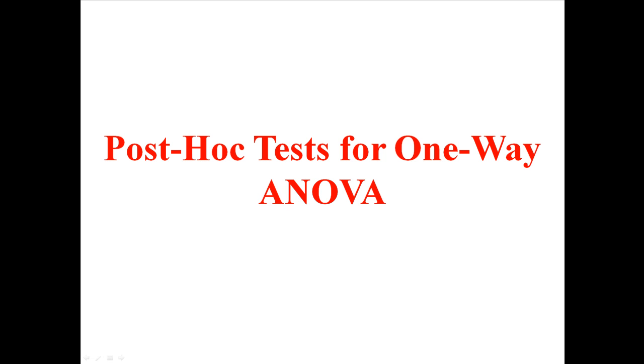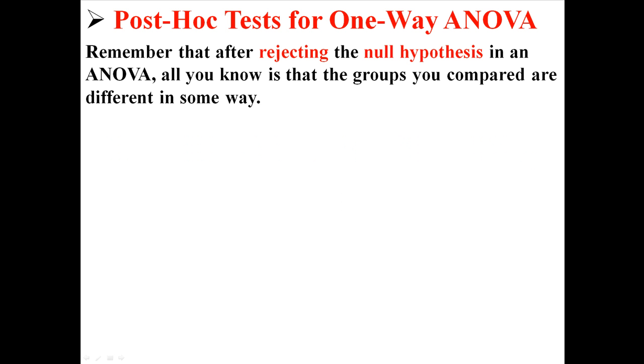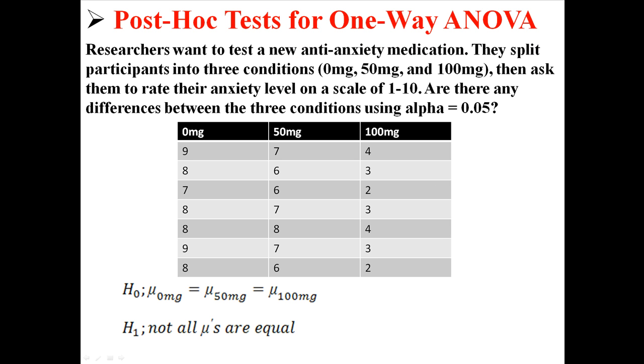In the previous lecture, I did a full one-way ANOVA, and now we're going to do a post-hoc test for that ANOVA. Remember that after rejecting the null hypothesis in an ANOVA, all you know is that the groups you compared are different in some way. Here is the example that I did a few lectures ago.